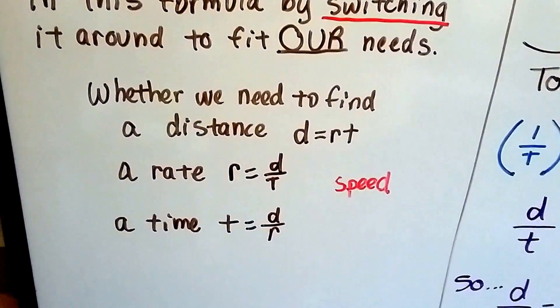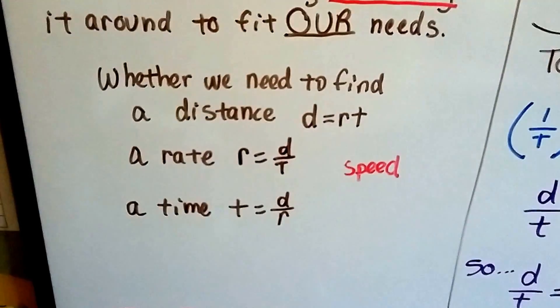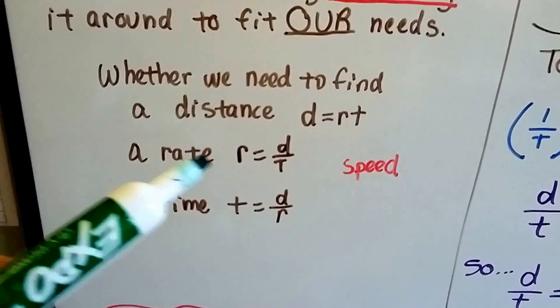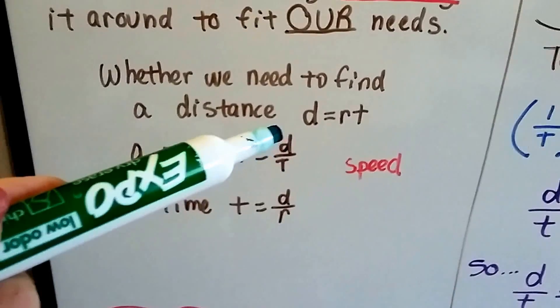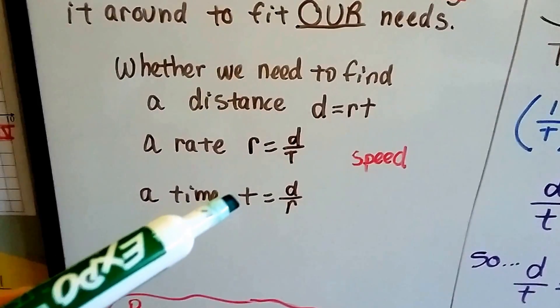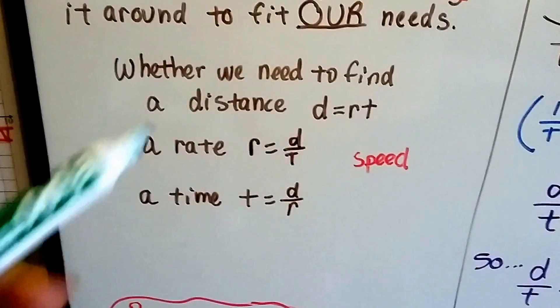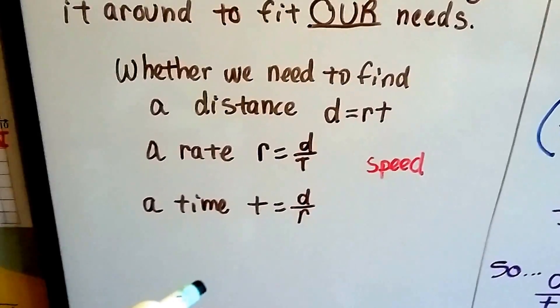Whether we need to find a distance, which is d equals rt, that's the rate times the time. If we need to find the rate, then we put r equals, and then we would have d divided by t. And if we needed to find the time, we would have t for time equals d divided by r. I'll show you how to rearrange this formula so that it makes sense.